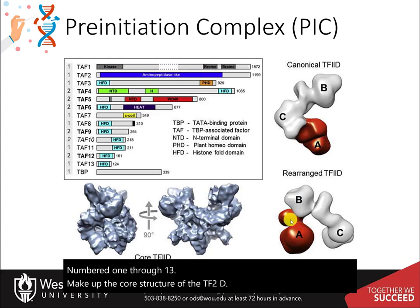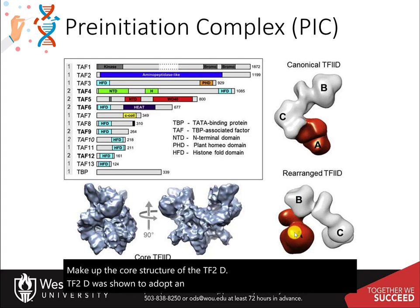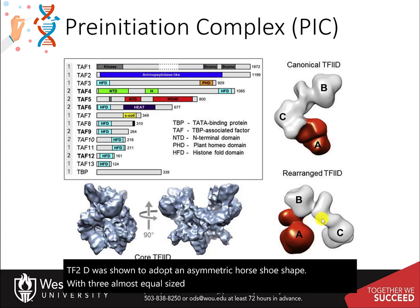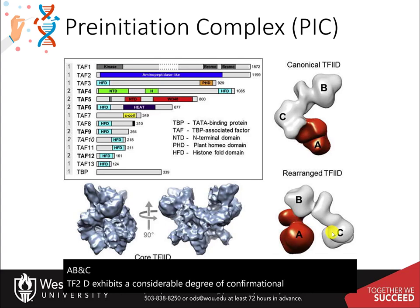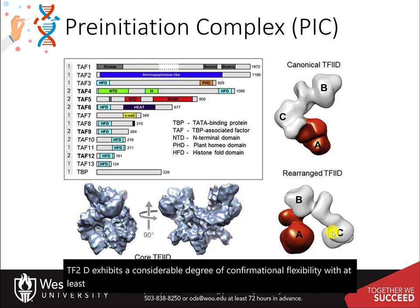TF2D was shown to adopt an asymmetric horseshoe shape with three almost equal-sized lobes, A, B, and C. TF2D exhibits a considerable degree of conformational flexibility with at least two distinct conformations: open and closed.